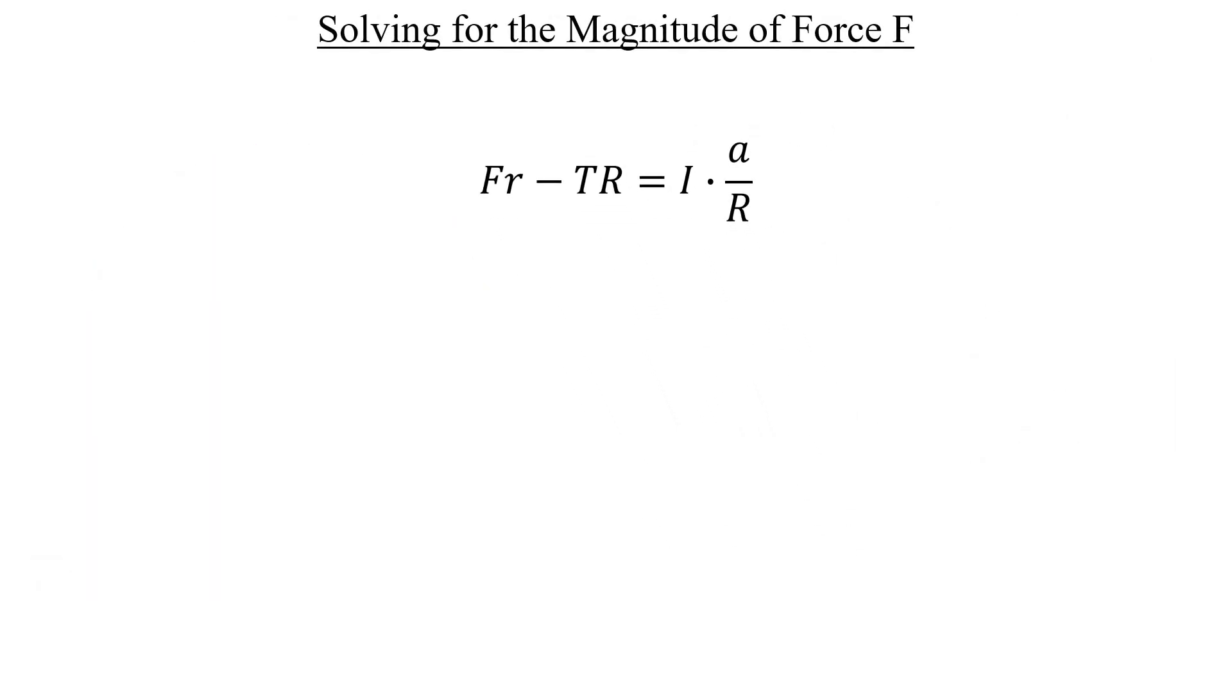If we take that TR term and move it over to the right, and then divide both sides by lowercase r, well, now we have F isolated on the left-hand side. I'm also going to factor out one over lowercase r on the right, and then insert our expression for the tension that we got earlier.